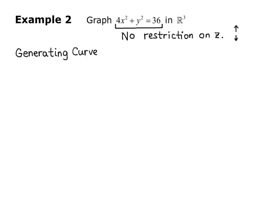Let's focus on our generating curve. In two dimensions, the graph of 4x² + y² = 36 is an ellipse. The standard form for an ellipse is x²/a² + y²/b² = 1. In this case, if we divide both sides by 36, we have x²/9 + y²/36 = 1. That tells us that the x-intercepts are ±3, 0, and the y-intercepts are 0, ±6.